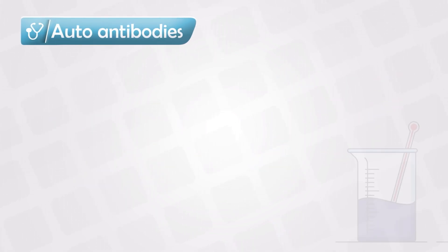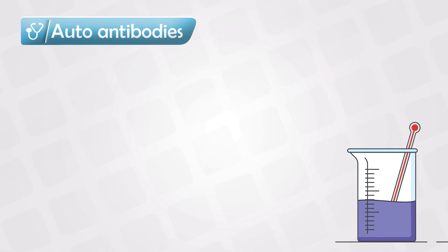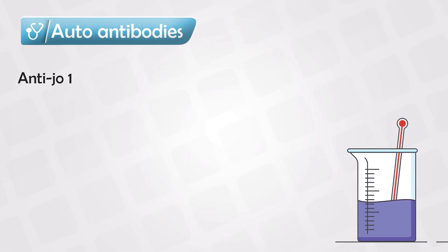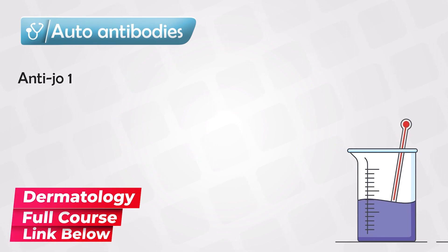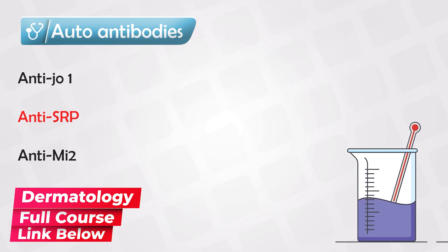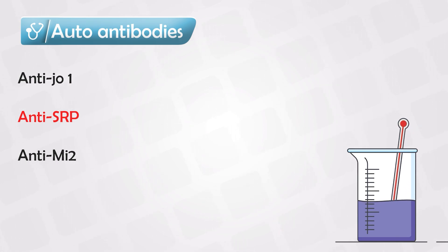Polymyositis and dermatomyositis are commonly put together because they are very similar in presentation. They are both autoimmune disorders caused by antibodies against one's self. These antibodies attack the muscles and different cell components. Specifically, we have the anti-JO1 antibody, which is an antibody against the tRNA synthetase, also the anti-SRP or the signal recognition particle, and the anti-MI2, which is an antibody against the helicase enzyme. These are highly specific for both polymyositis and dermatomyositis.